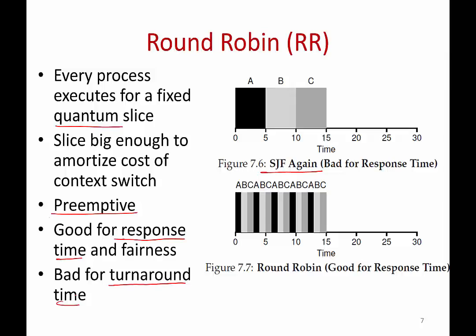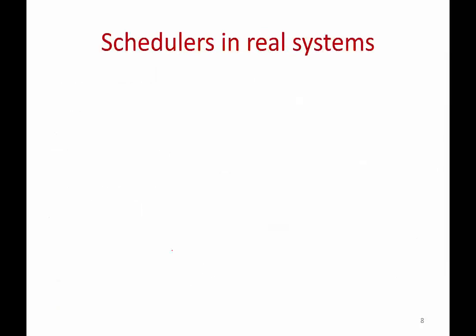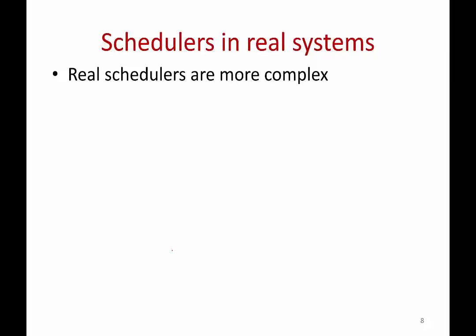There's no one right answer. Each policy has strengths: Shortest Job First is good for turnaround time, Round Robin is good for response time. Depending on the goals of your operating system, you pick a suitable scheduling policy. In real life, schedulers are more complex — they don't use just one simple policy. Real-life scheduling policies are some combination of all these ideas.